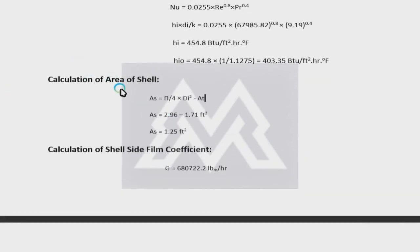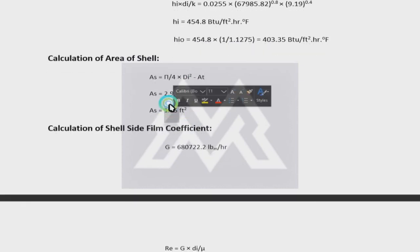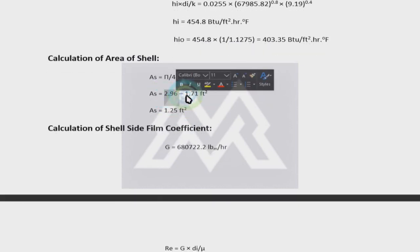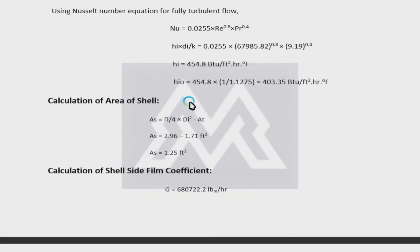The next step is calculating the shell side area. The shell area can be calculated using the effective equivalent diameter of the shell, or by subtracting the total tube area from the total shell cross-sectional area. For example, total shell area was 2.96 ft² and total tube area was 1.71 ft², giving a shell-side flow area of 1.25 ft². The shell-side area can be smaller or larger depending on how many tubes are placed inside the shell.